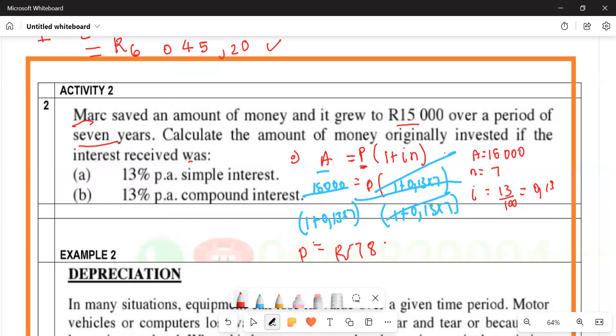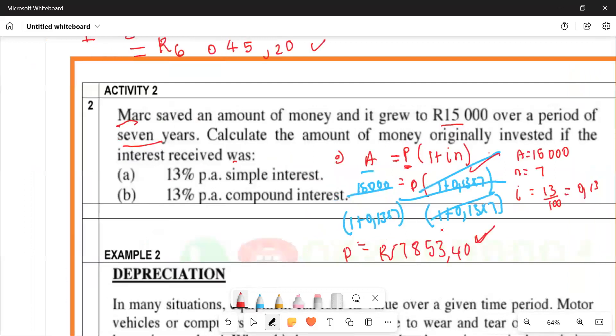You get 7853.40. For something like this you get two marks. Now number b.